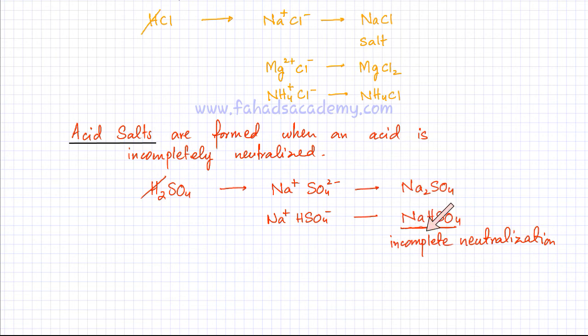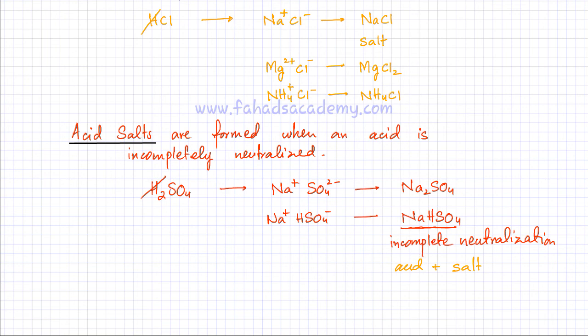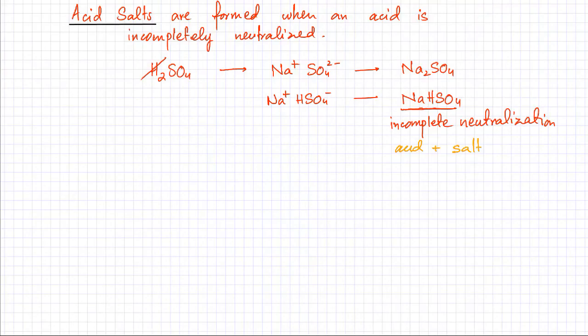This compound NaHSO₄ is a salt because it is a product of neutralization, but not a complete neutralization. That would suggest that this compound can still produce an H⁺ ion because it still has one remaining, so it can still act as an acid. So it's an acid plus a salt — it's an acid salt.